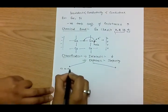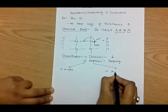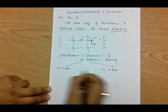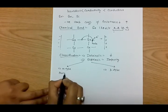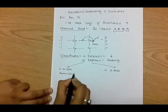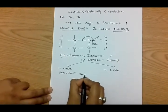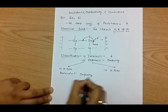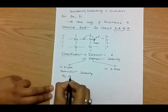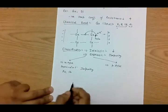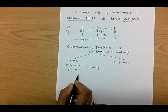Number one is the N-type semiconductor and number two is the P-type semiconductor. N-type semiconductor materials are those in which we have added a pentavalent impurity, such as arsenic or antimony. Pentavalent impurities are those in which the outermost shell has five valence electrons.